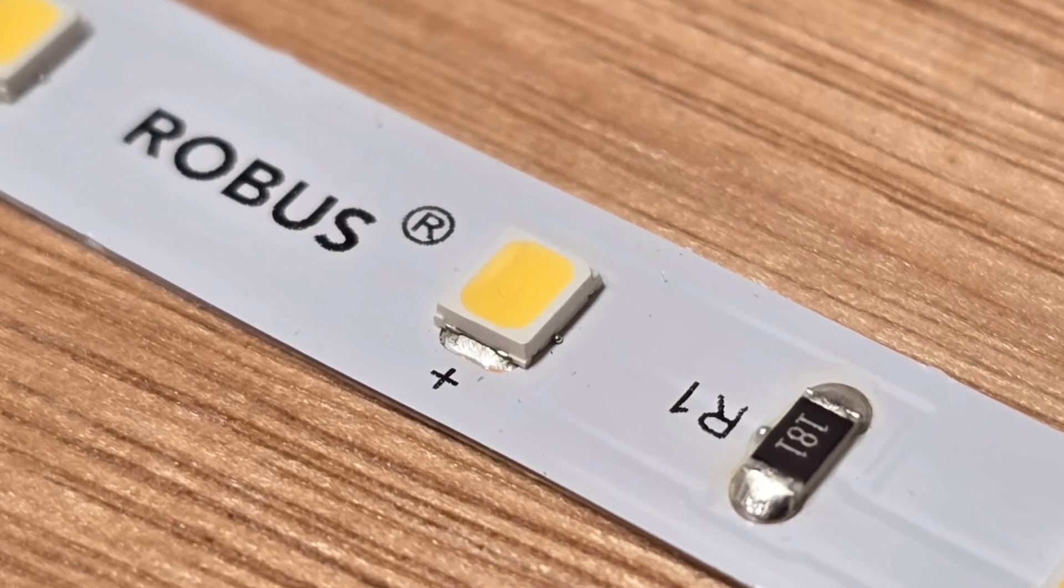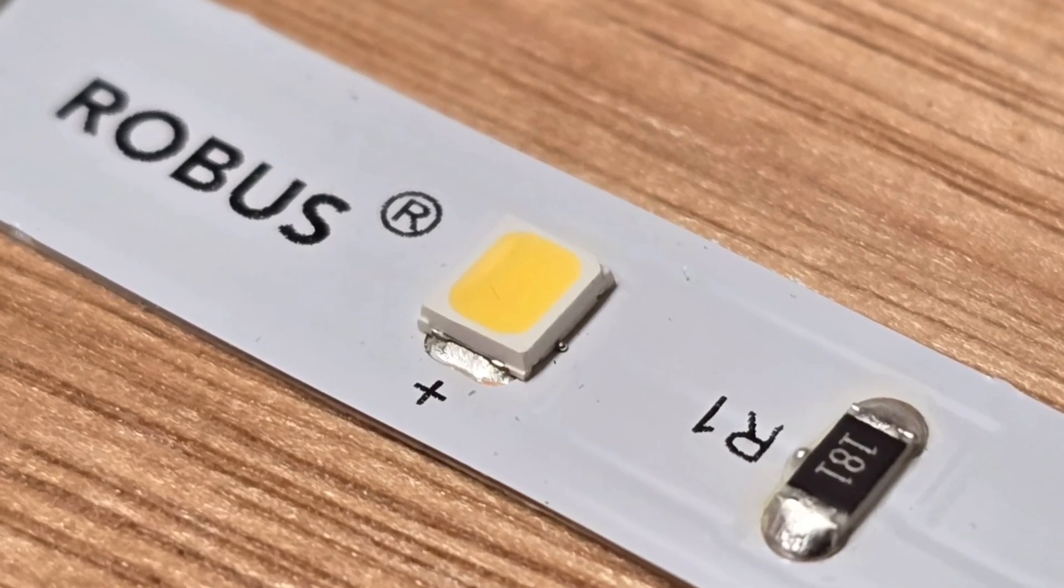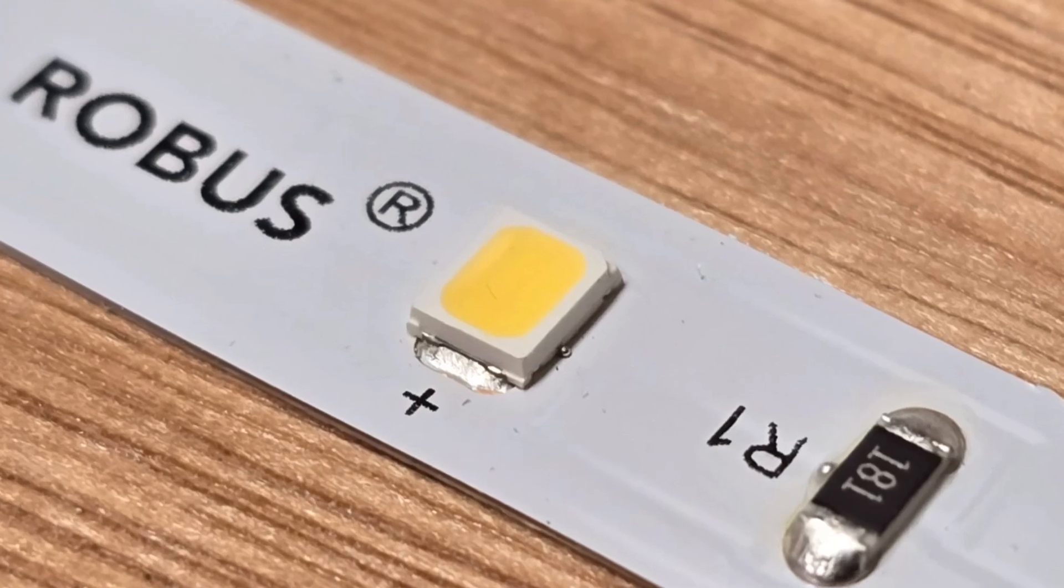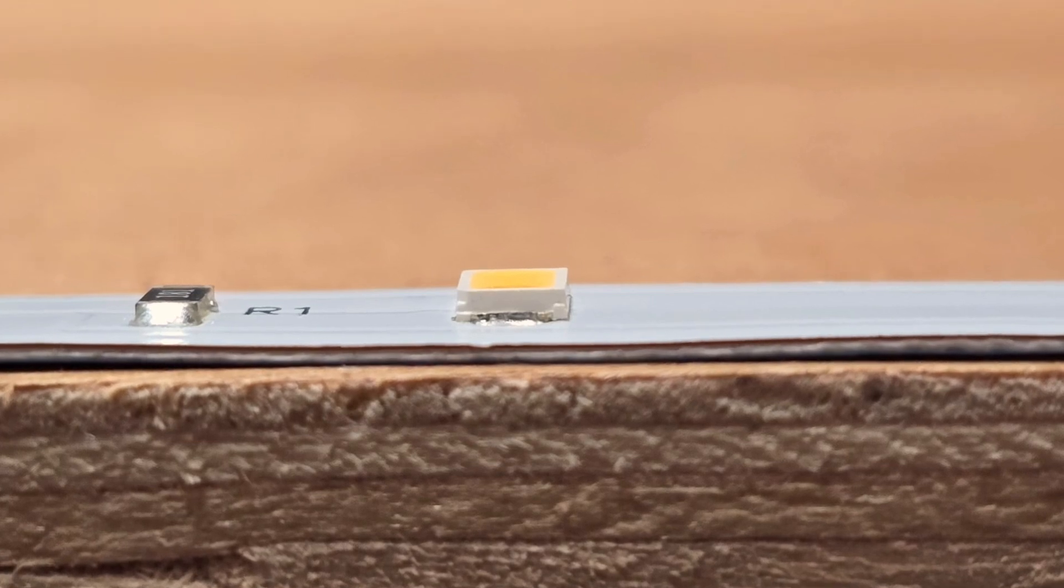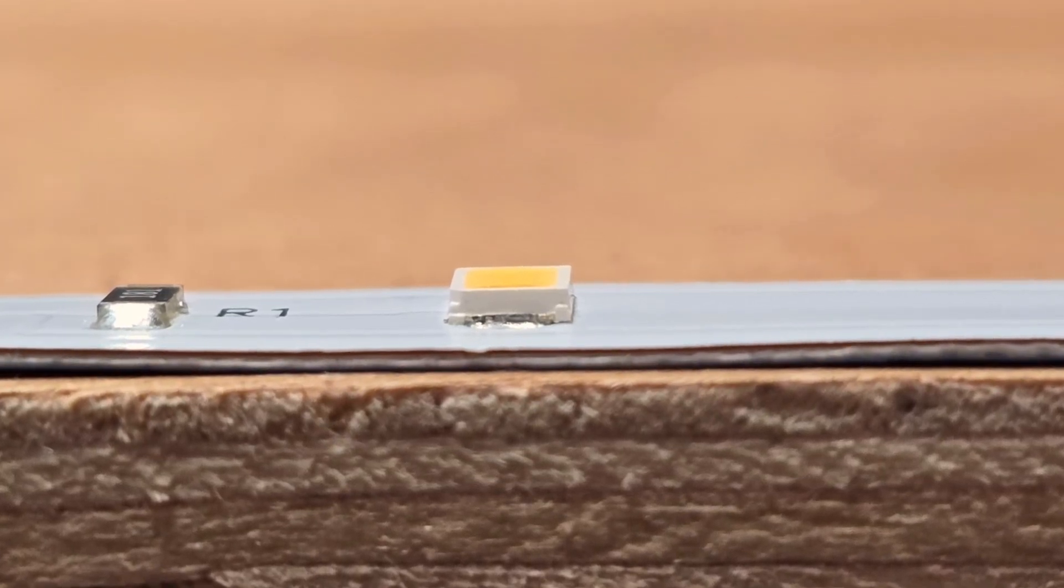You might hear this type being referred to as SMDs, which just stands for surface mounted device. As its name suggests, it's mounted onto the surface of the LED strip and connected to the copper underneath through holes left in the insulation for that purpose.